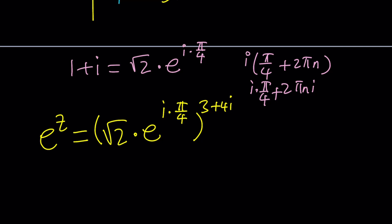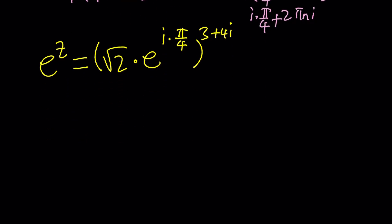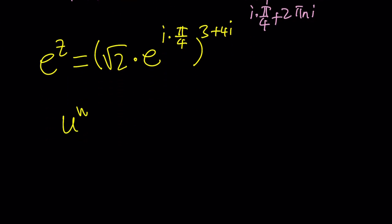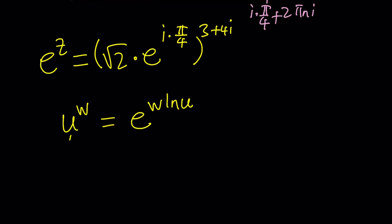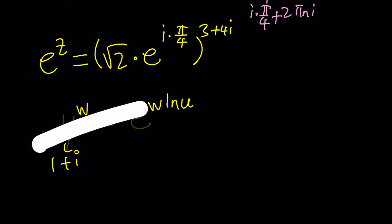So here's the fun part. How do you raise a complex number to another complex power? Suppose you have something like u to the power w. U and w are both complex numbers. Obviously, we can write this as e to the power ln u to the w or e to the power w ln u. The most important part here is that because u is equal to 1 plus i, how do we log a complex number? We can also natural log both sides and bring the 3 plus 4i down so we don't have to deal with this.